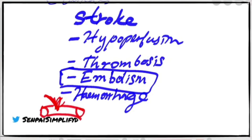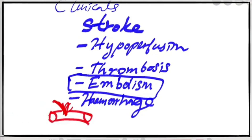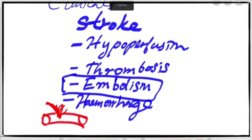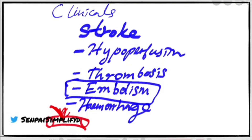Another problem you come across in the arterial blood supply to the brain is intracerebral aneurysms. These are commonly known as ticking time bombs because aneurysms basically do not show any symptoms at all. You could be walking around with an aneurysm and some people would never know until they die — one day the aneurysm would rupture.